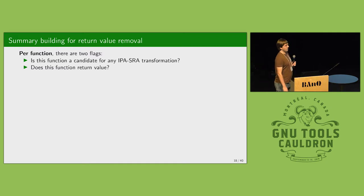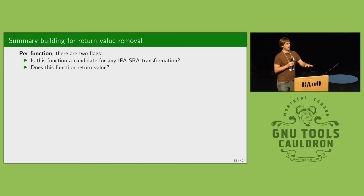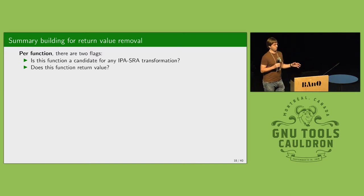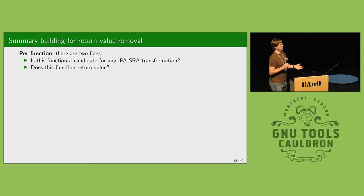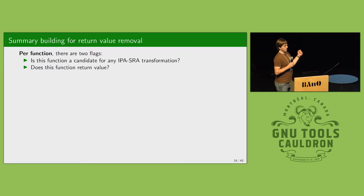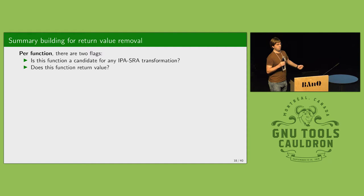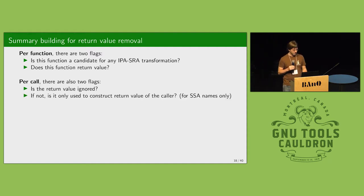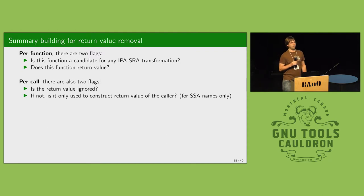For unused return value removal, per function we just need two things in the summary. The first is just a general eligibility check — is this a candidate for any IPA SRA transformation? A function may not be a candidate if it has the 'used' attribute or we cannot change its signature for other reasons. The second thing, specific to return value removal: we save a bit indicating the function returns a value, so we don't care about void functions.